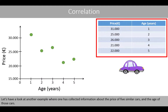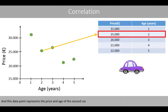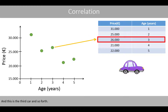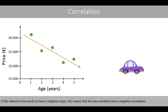Let's have a look at another example, where one has collected information about the price of five similar cars and the age of those cars. Each data point represents the price and age of each car. If you try to draw a line through the data, we see that the line points down to the right, which means that it has a negative slope. If the reference line tends to have a negative slope, this means that the two variables have a negative correlation.